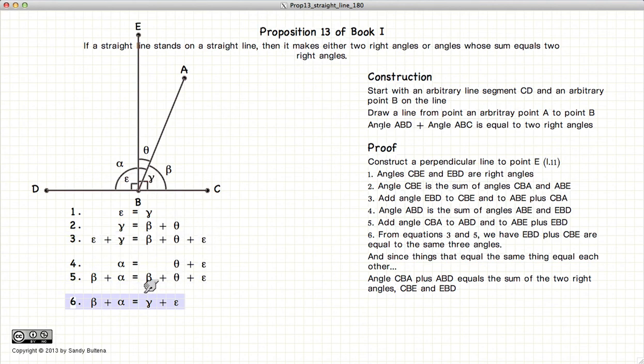But gamma plus epsilon are both right angles, so we have just proven that beta plus alpha is equal to two right angles.